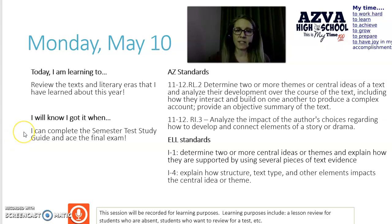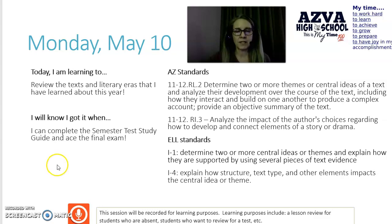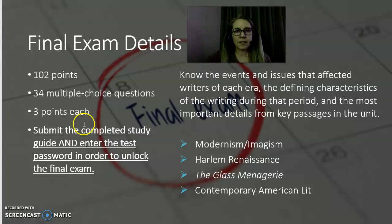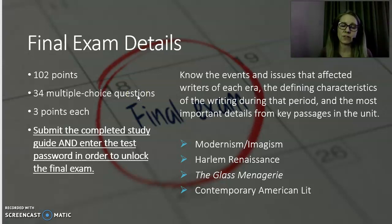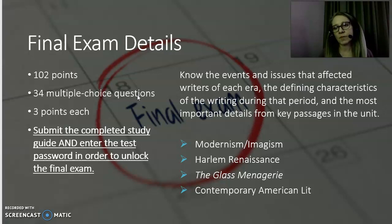You're going to be reviewing the texts and literary eras that you've learned about this year so that you can complete the semester study guide and ace that final exam. This is from Monday, May 10. We'll talk about final exam details briefly here. It is worth 102 points and has 34 multiple choice questions — they are three points each. You will submit the completed study guide and enter the test password in order to unlock the final exam. It is a two-part password. You'll need it from the end of this recording and from the end of the second session recording.